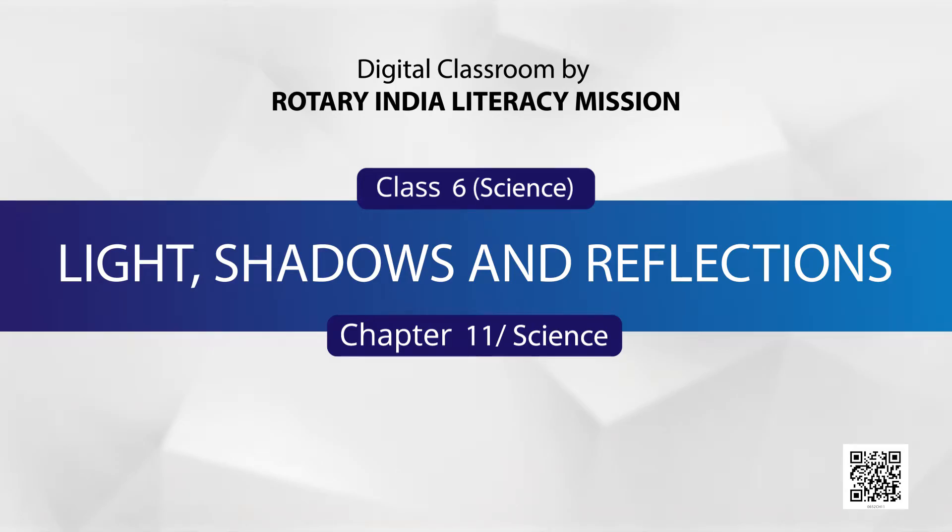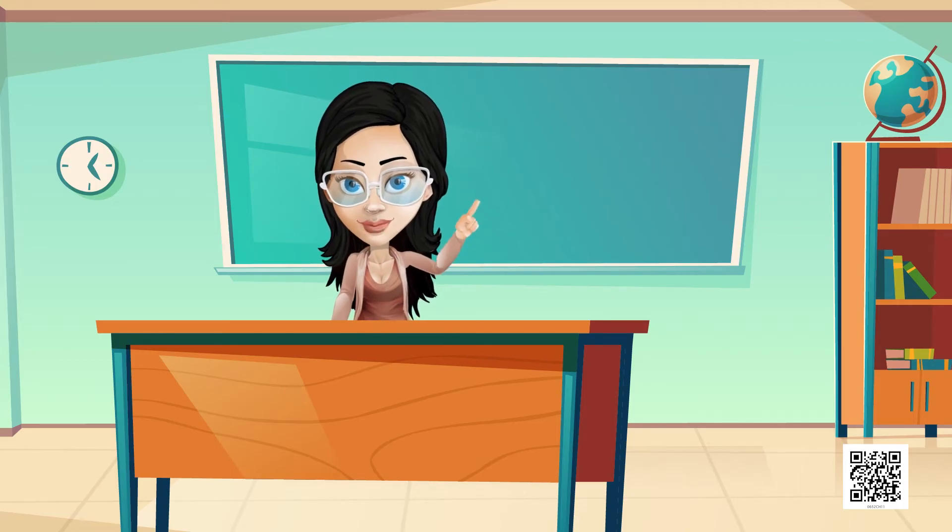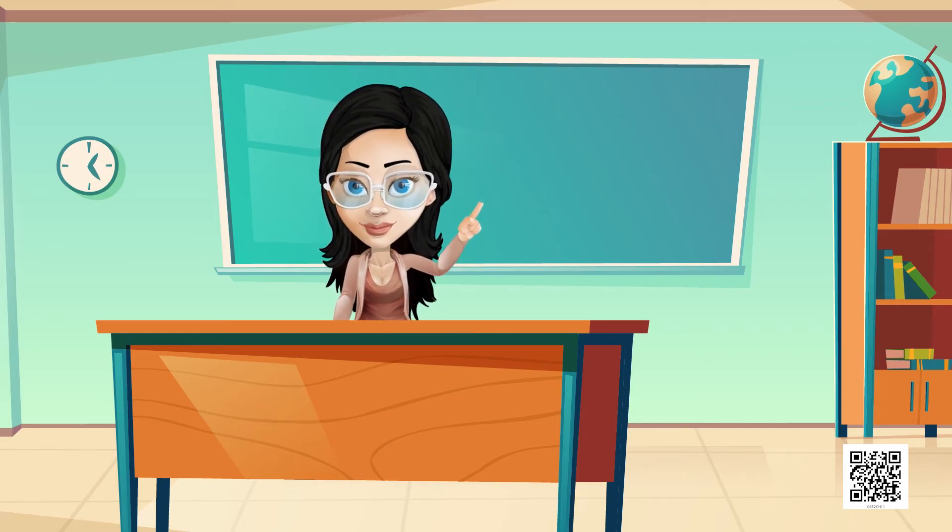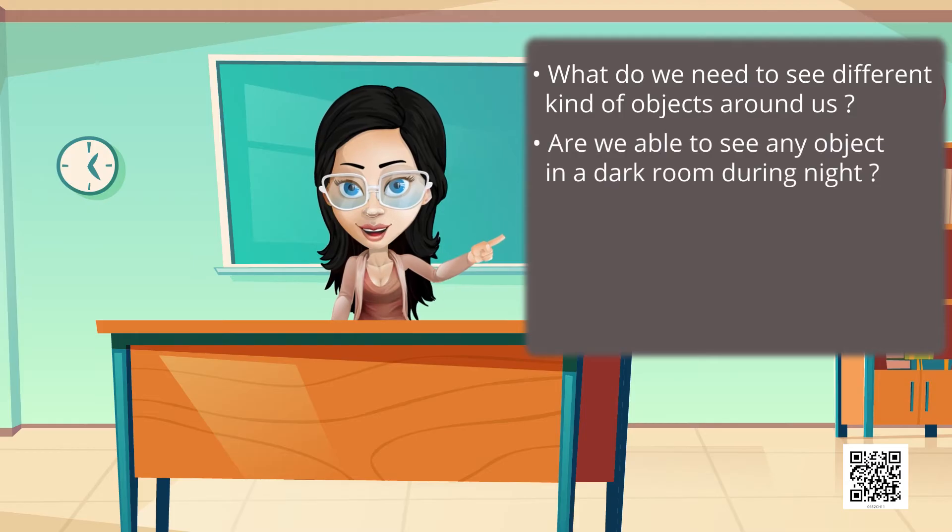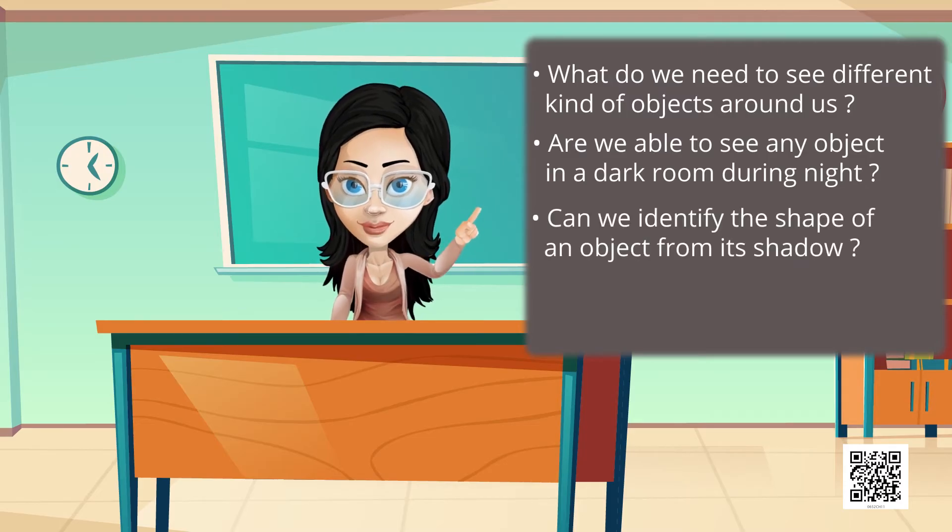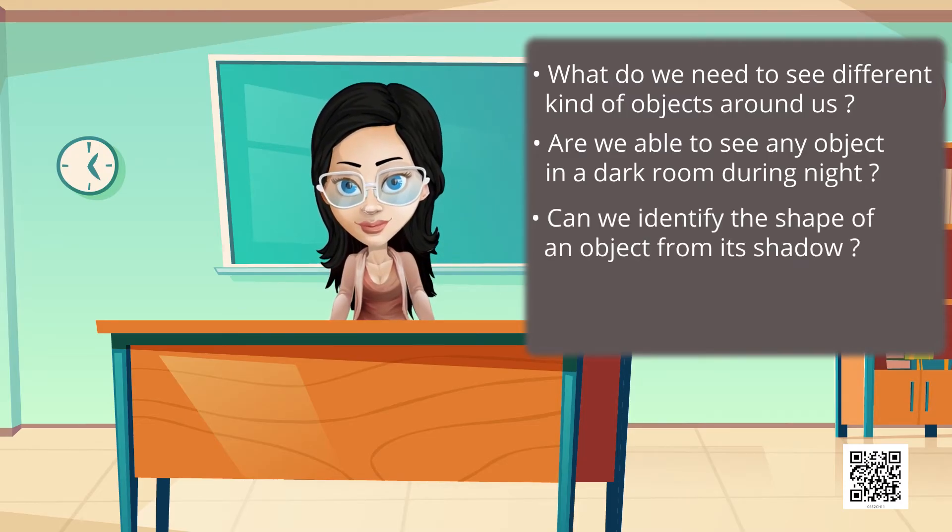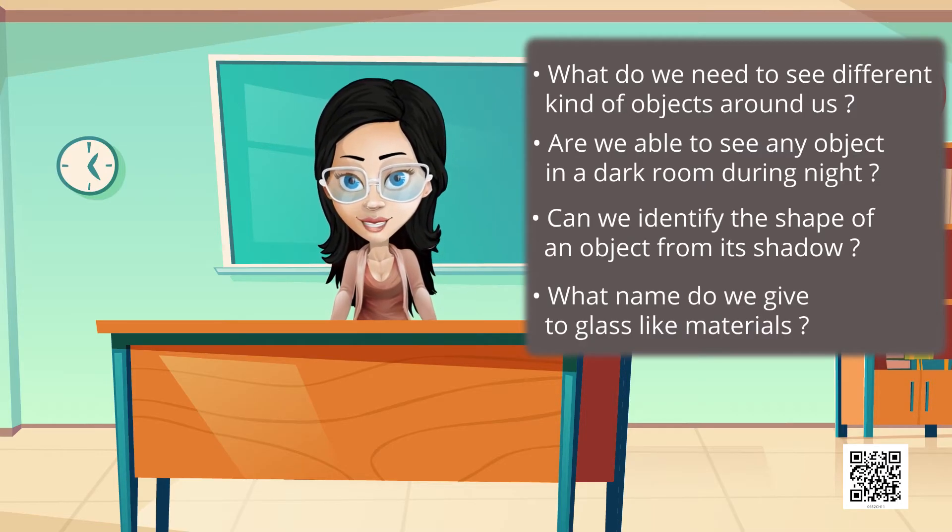Children, first of all, we will recall what we already know from our previous classes. What do we need to see different kind of objects around us? Are we able to see any object in a dark room during night? Can we identify the shape of an object from its shadow? What name do we give to glass-like materials?